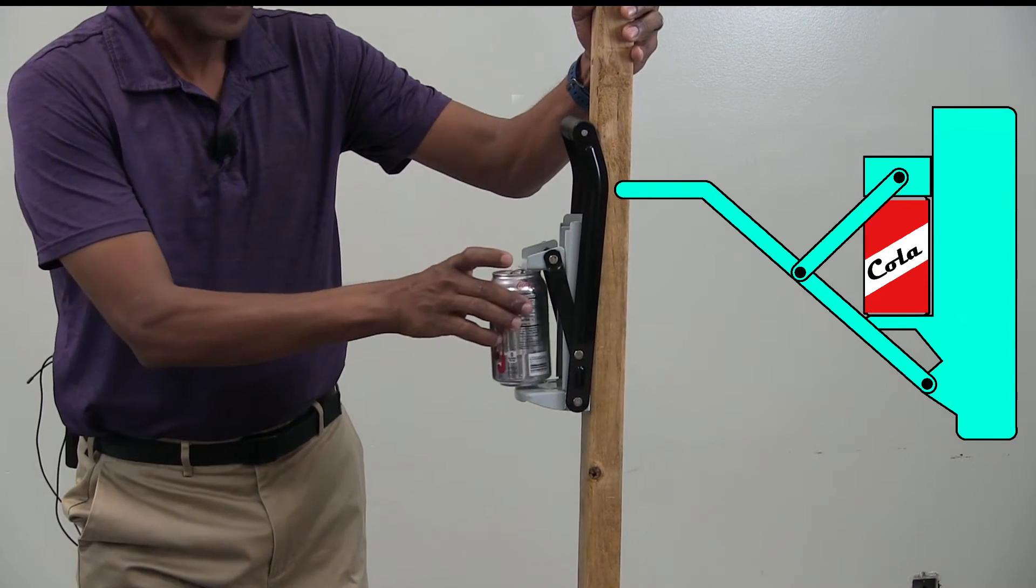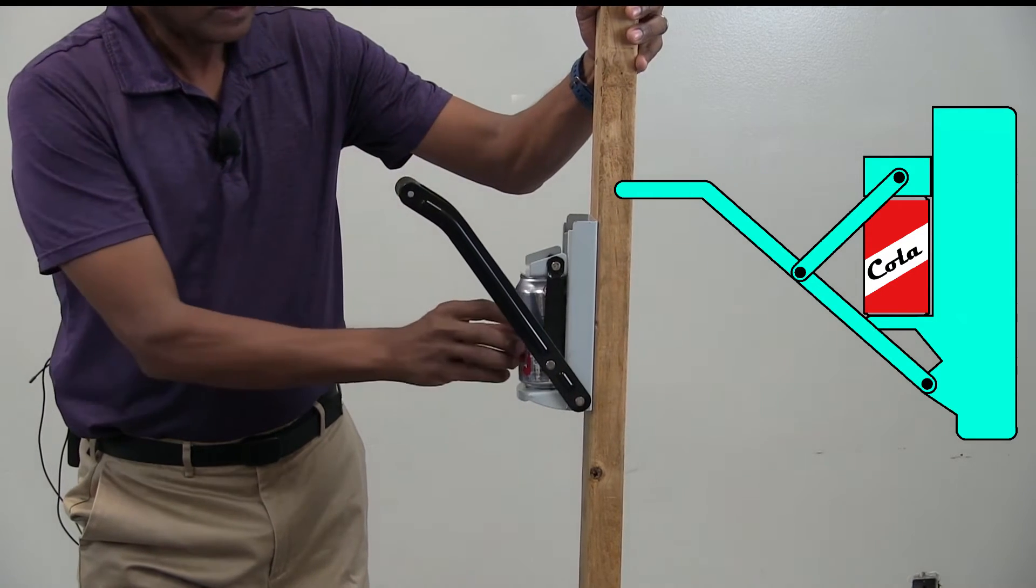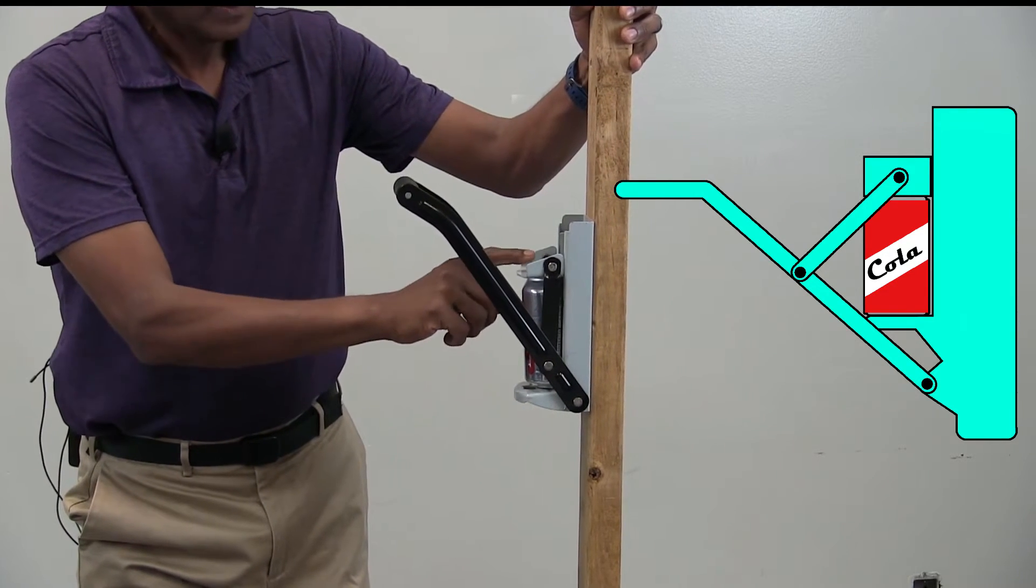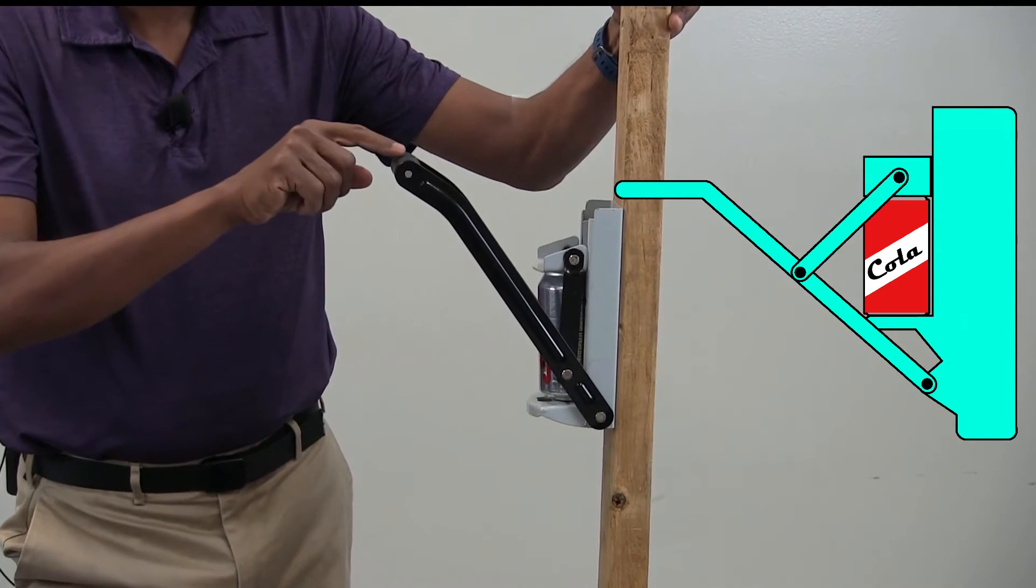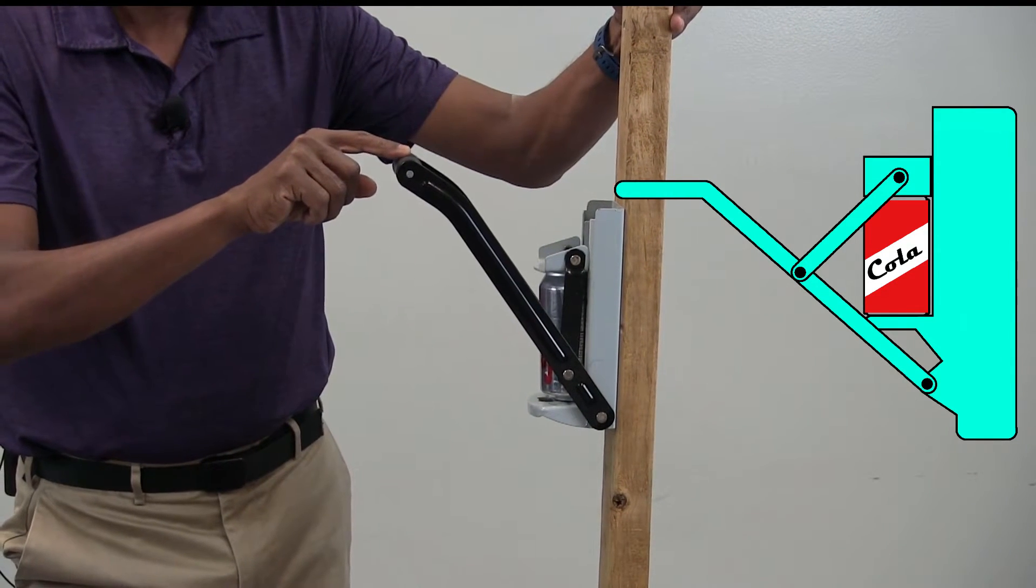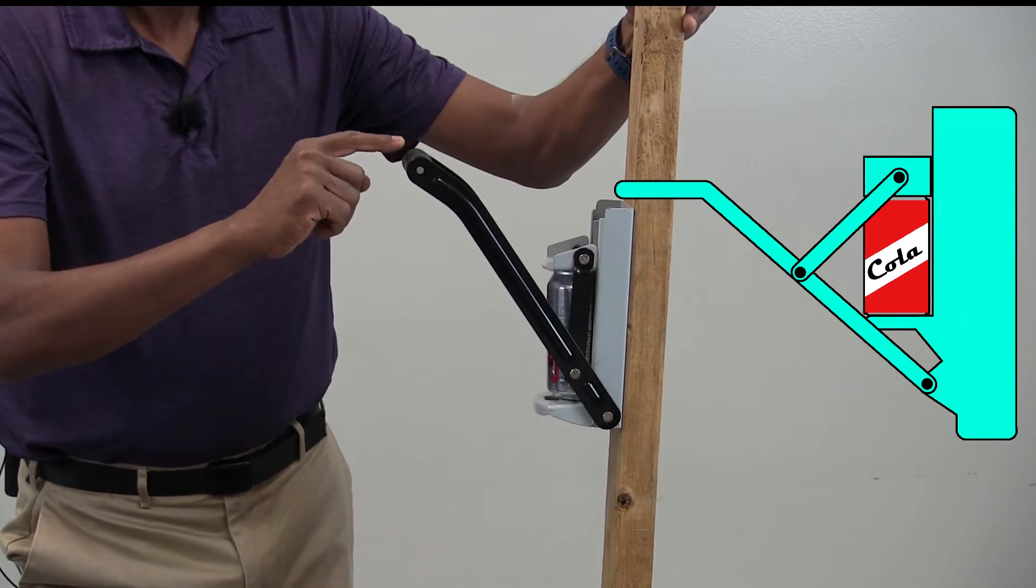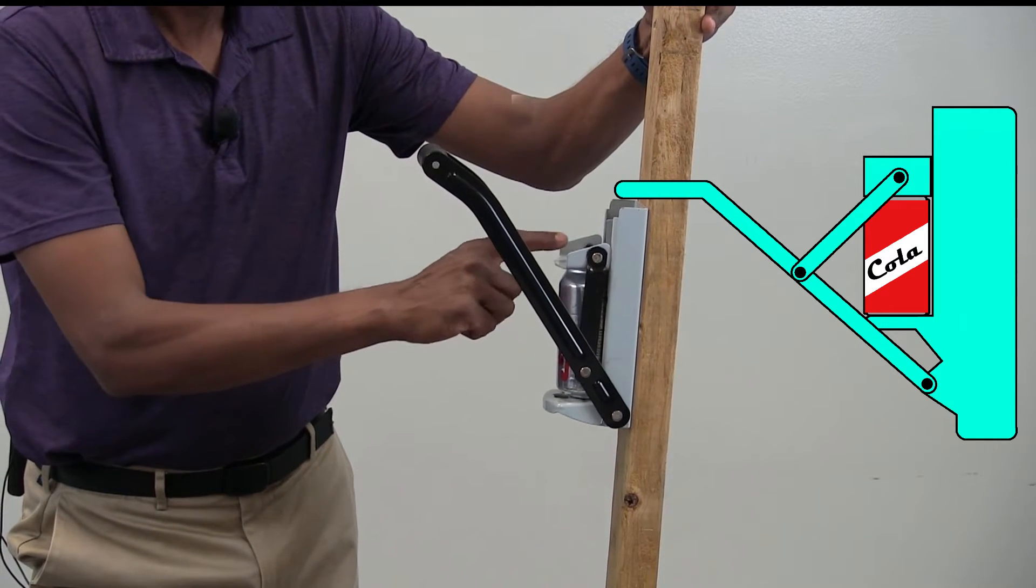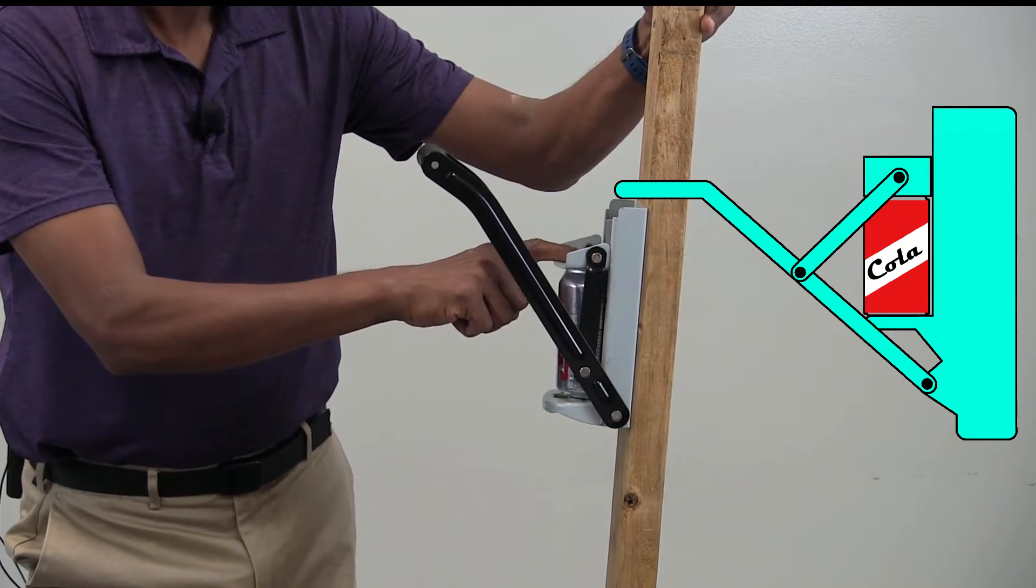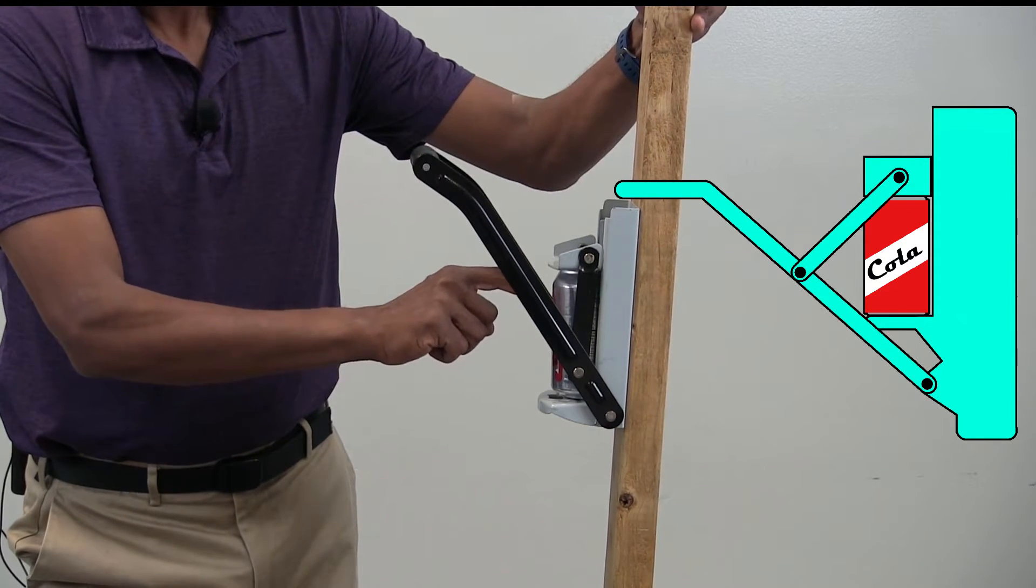Let me do that now. Here is a can. I'm going to place it here and I release the handle until the slider touches it. Right now, the can is not experiencing any crushing forces because I am not applying any force on the handle. So if I apply a force on this handle, that force is going to be transmitted through this linkage system and generate a crushing force on the slider which will ultimately collapse the can.